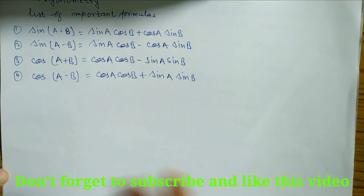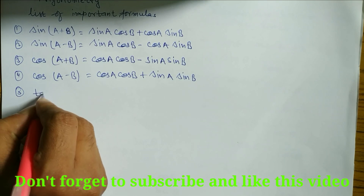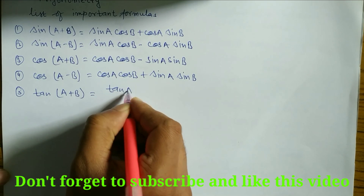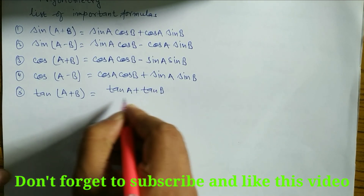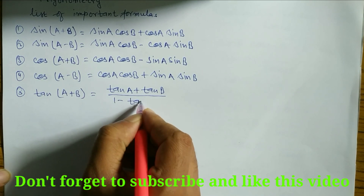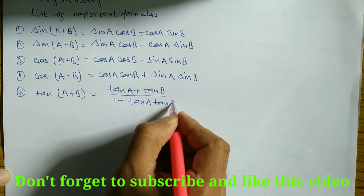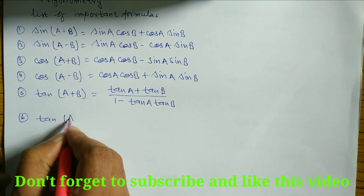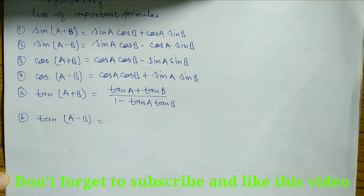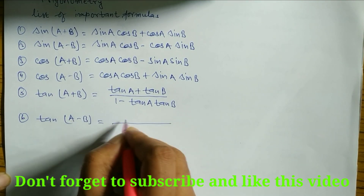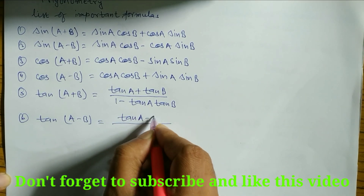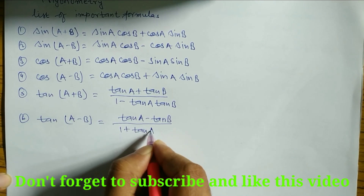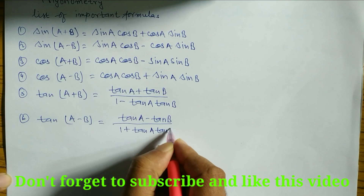Formula number 5: tan(A+B) is equal to (tan A + tan B) / (1 − tan A tan B). Similarly, formula number 6: tan(A−B) is equal to (tan A − tan B) / (1 + tan A tan B).